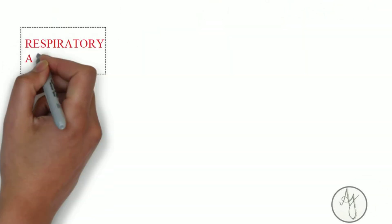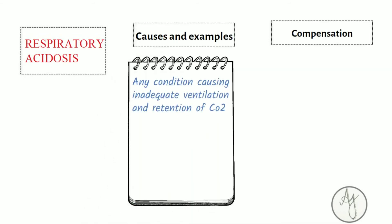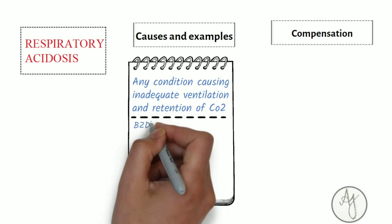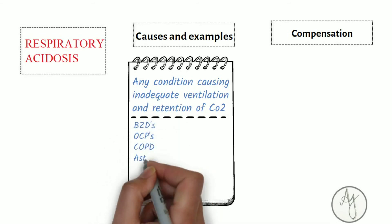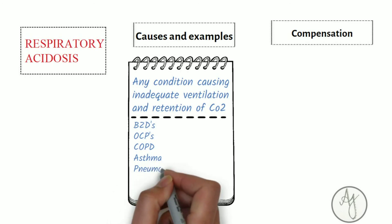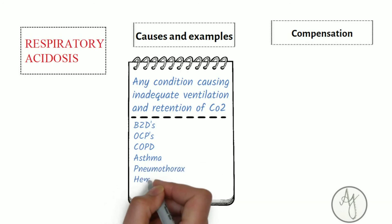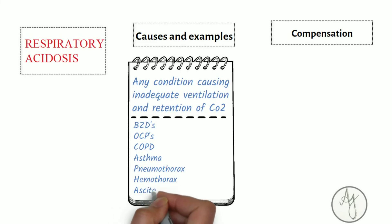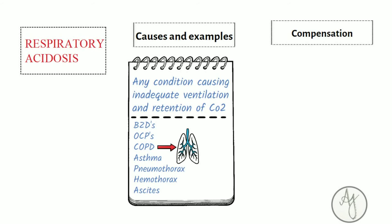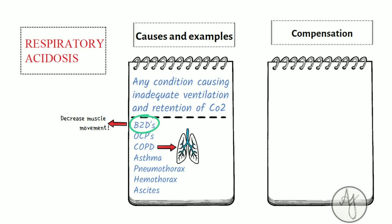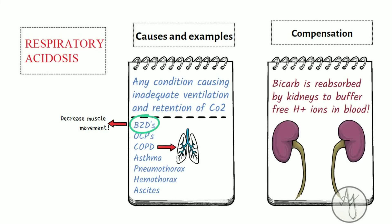Coming to respiratory acidosis — this is any condition causing inadequate ventilation, like benzodiazepines, COPD, asthma, pneumothorax, hemothorax, or ascites. In COPD, there is a barrel chest so chest expansion is decreased, leading to increased CO2. Benzodiazepines can decrease muscle movement, also causing respiratory acidosis. This is compensated by the kidneys by increasing bicarbonate.